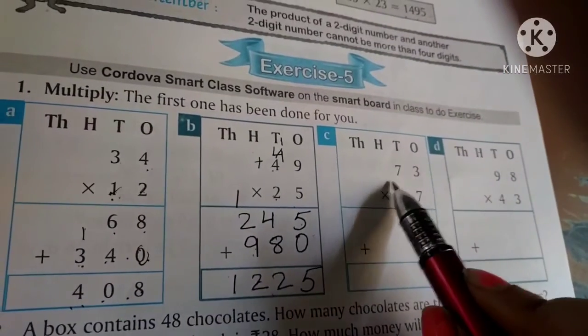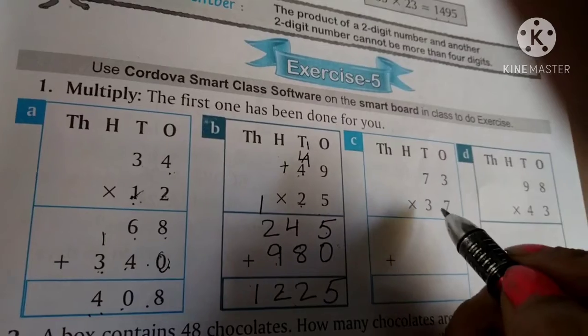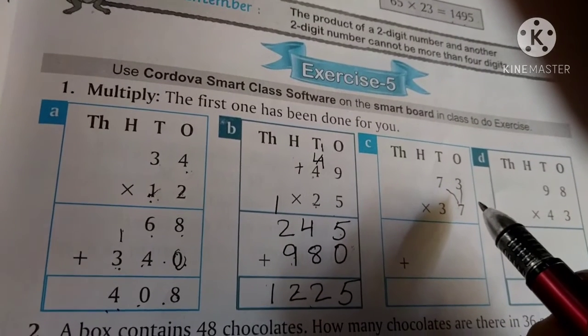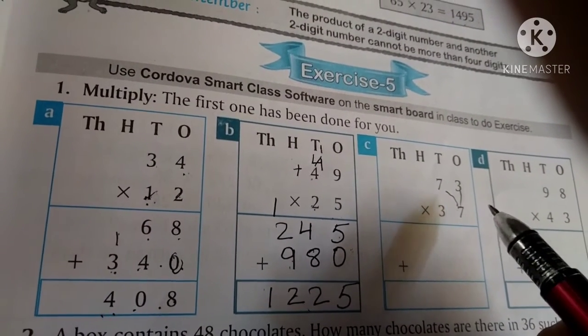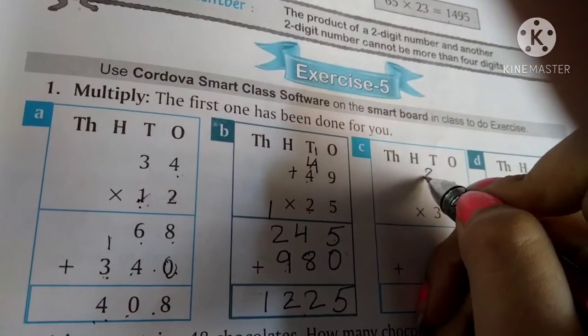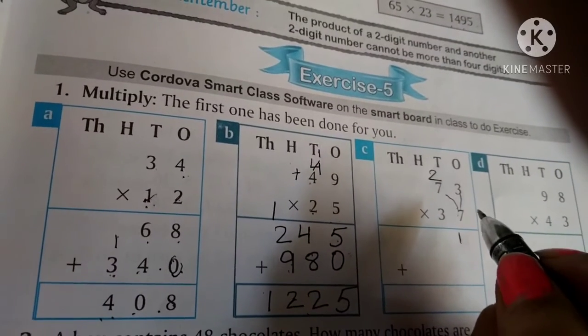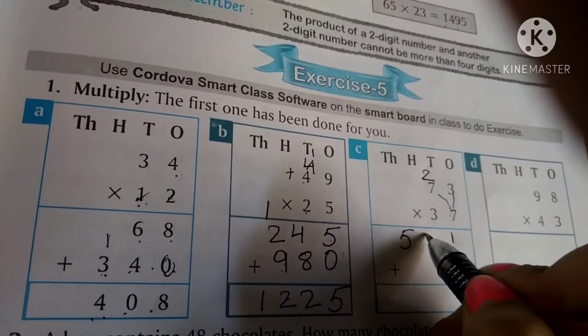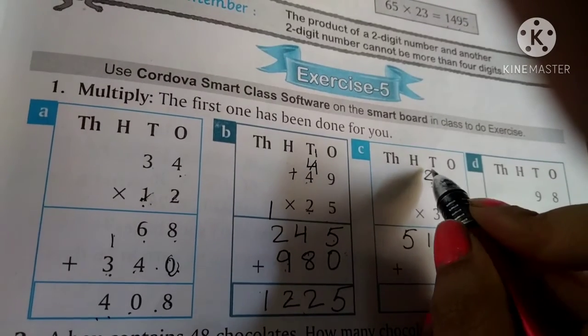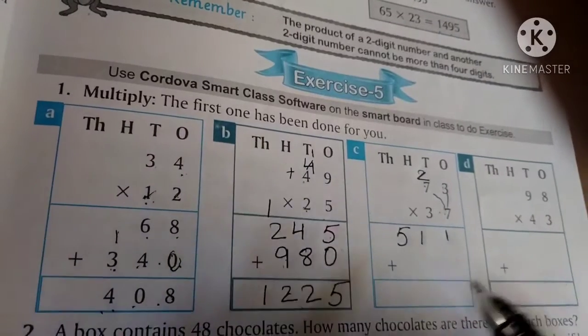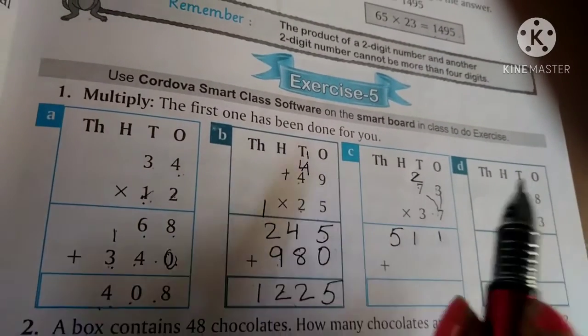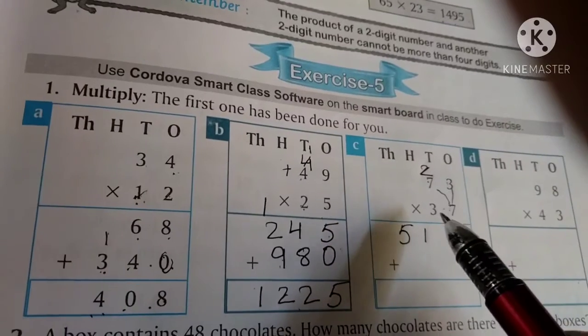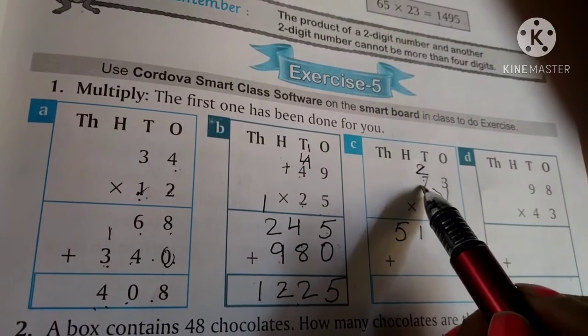Number 3: 73 multiply by 37. First, multiply by 7: 3 times 7 is 21, write 1 down and carry 2. 7 times 7 is 49, plus 2 equals 51. We get 511 in the first row.